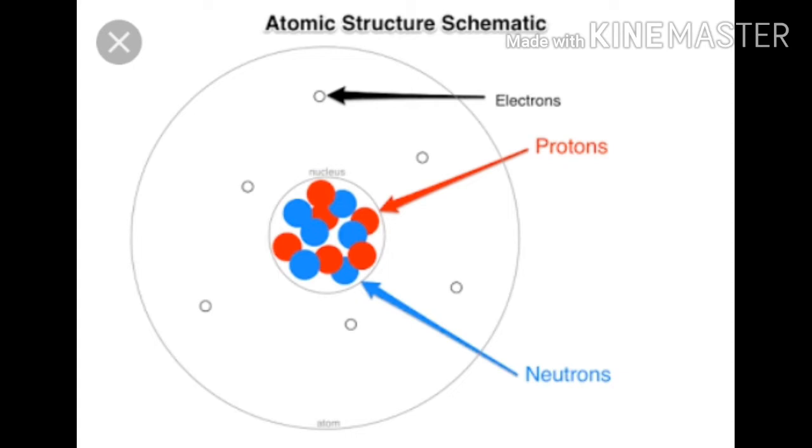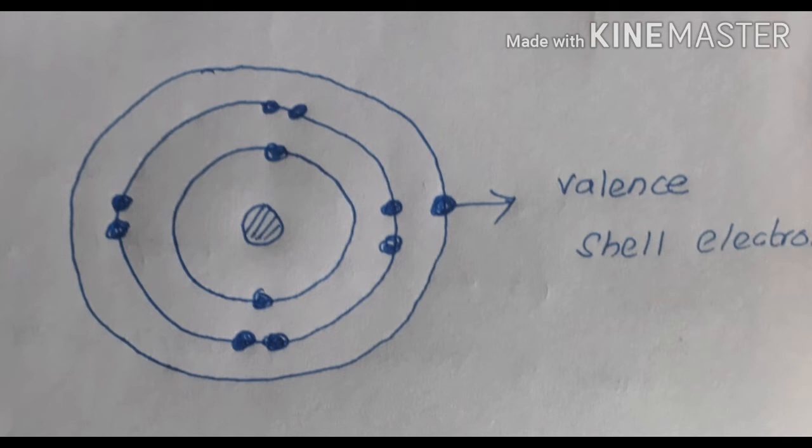Here, I am showing you one picture. There are three circles and one shaded circle. The shaded circle is called the nucleus of an atom. The three circles, we can term as a shell — S-H-E-L-L, shell.